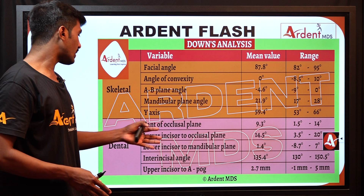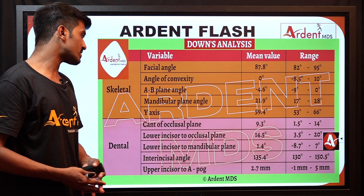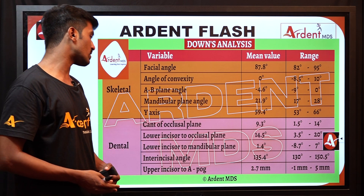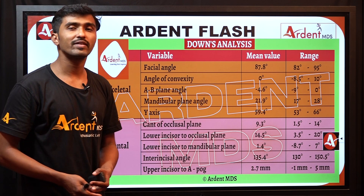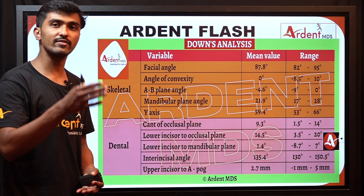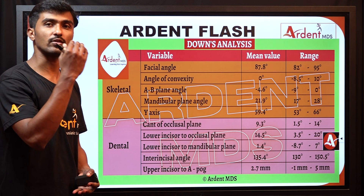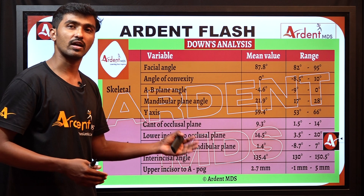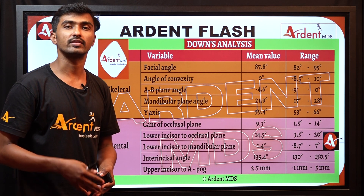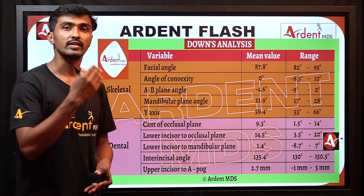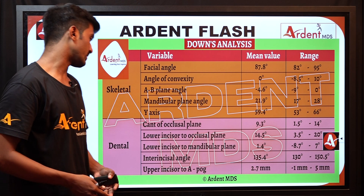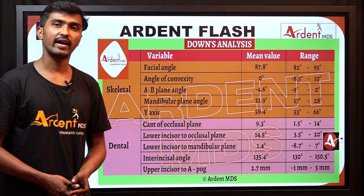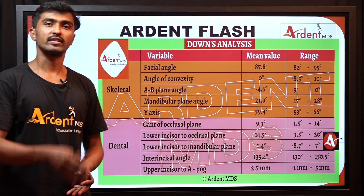Coming to the dental parameters, we have the cant of the occlusal plane, lower incisor to occlusal plane, and lower incisor to mandibular plane. These indicate whether the lower incisor is proclined or retroclined, and also inform the type of treatment plan and prognosis of the patient. The inter-incisal angle is the angle between the long axes of both upper and lower central incisors.